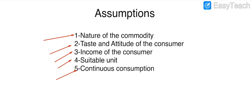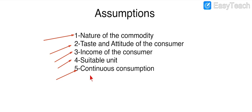The next assumption is continuous consumption. It means the product being consumed must be used continuously. For example, I drink one glass of water, then a second glass, then a third glass. But if I drink one glass on Monday, a second on Tuesday, and a third on Wednesday, these three glasses are not going to decrease marginal utility. Marginal utility will only decrease when all units are consumed continuously within a specified time period.